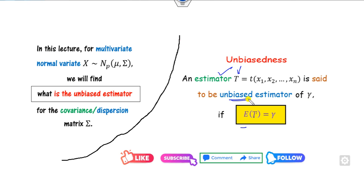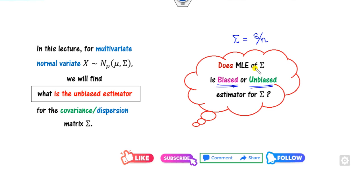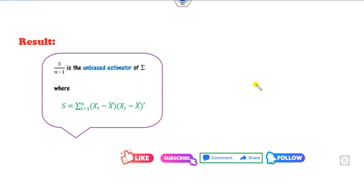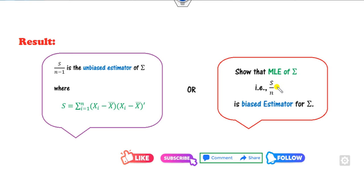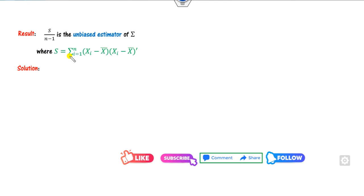So, is the MLE of sigma a biased or unbiased estimator? The result is: if capital S is the sample covariance matrix, then S divided by n minus 1 is the unbiased estimator. That means S divided by n is the biased estimator. This is the result, but I will show you how to prove it in this lecture.